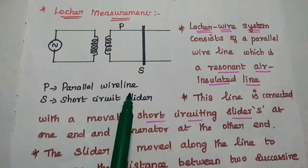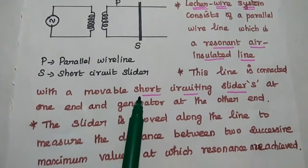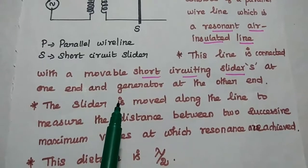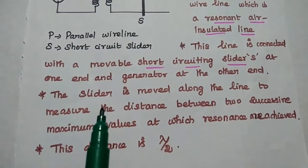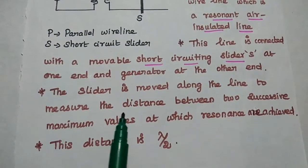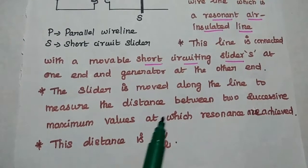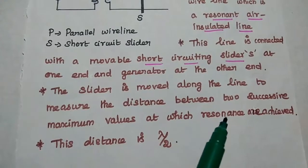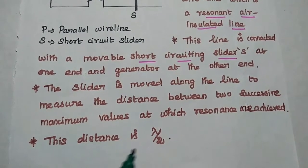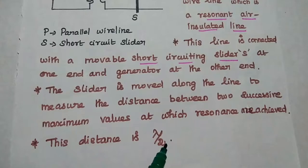Resonant condition is also known as the maximum voltage level. The slider is moving along the line to measure the distance between two successive maximum values at which the resonant conditions are achieved. Here the distance is always lambda by 2.